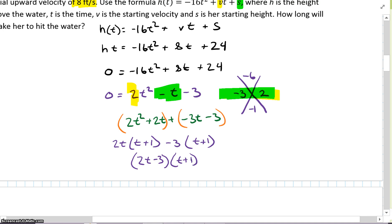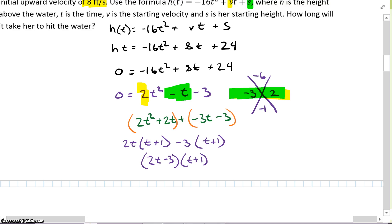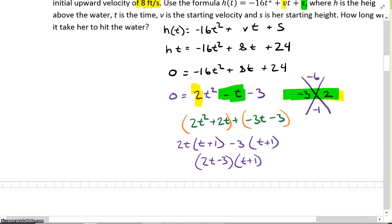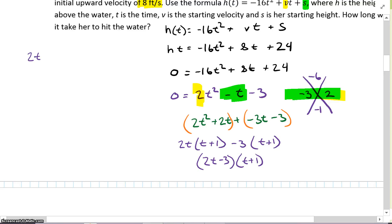I'm not done yet. How long will it take her to hit the water? So I've got to set each of these equal to 0 to solve. So 2t - 3 = 0 and t + 1 = 0. Well, t cannot equal -1, so that's out. 2t, add 3 to each side equals 3. Divide each side by 2. t equals 3/2. So t is going to equal 1.5 seconds. That's a positive number, so that one works.